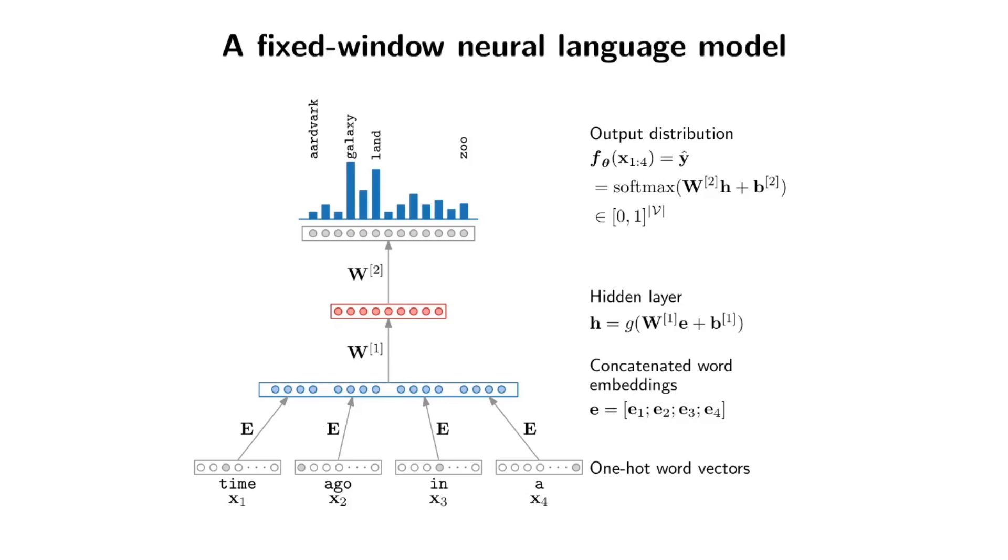If you know about feed forward neural networks, what you can do is if you have a sentence like a very very long time ago in a and you want to predict the next word, then you can use a sliding window over the sentence. In this case I use a window of four words.